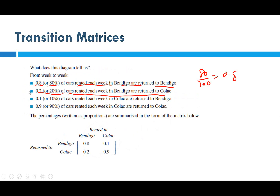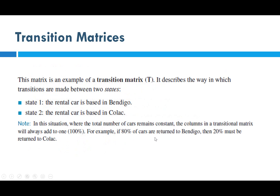10% of the cars rented each week return to Bendigo, and so on. All they're saying is that we can set up a transition matrix like this, where we have 'returned to' and 'rented in' for Bendigo and Colac. So 0.8 means rented in Bendigo and returned to Bendigo, 0.1 means rented in Colac and returned to Bendigo, and so on. It's straightforward to set up those transition matrices.